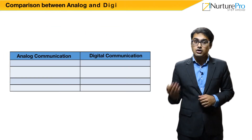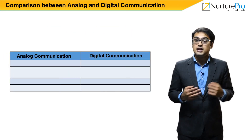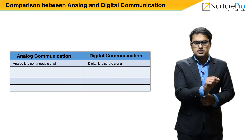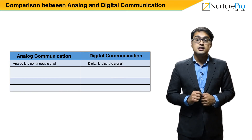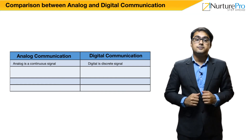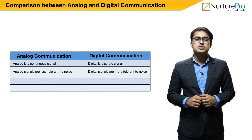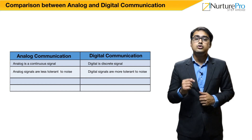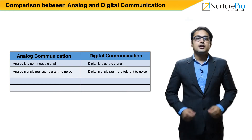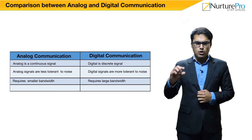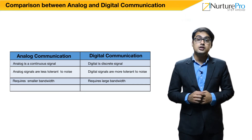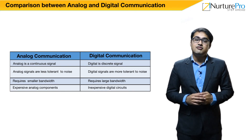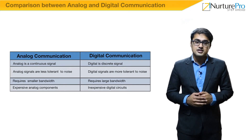Let's compare analog and digital communication. In analog communication, the signal is continuous, whereas in digital communication, the signal is discrete. Analog signals are less tolerant to noise, whereas digital signals are more tolerant towards noise. Analog communication requires smaller bandwidth, whereas digital communication requires a larger bandwidth. Analog components are very expensive, whereas digital circuits are inexpensive.